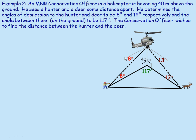Because the reference lines are parallel to the ground, the angle at the hunter's side is also 8° and the angle of inclination from the deer up to the helicopter is also 13°. We label H as the distance from directly below the helicopter to the hunter, and D as the distance to the deer. Once we find H and D, we'll know two sides of the ground triangle and the included angle of 117°, so we can use the cosine law to find side G.